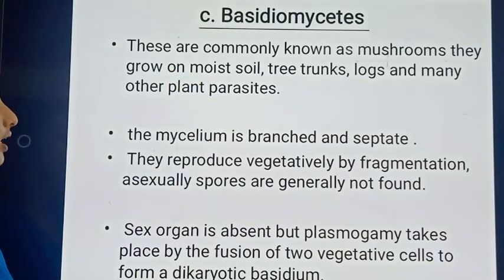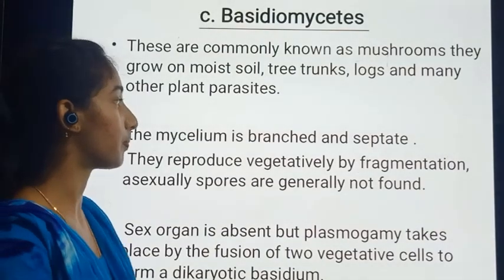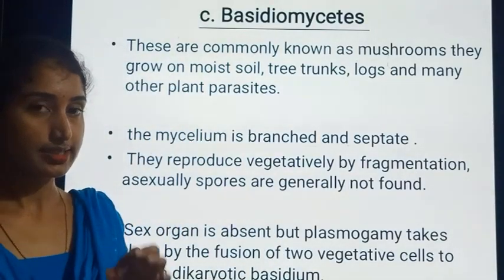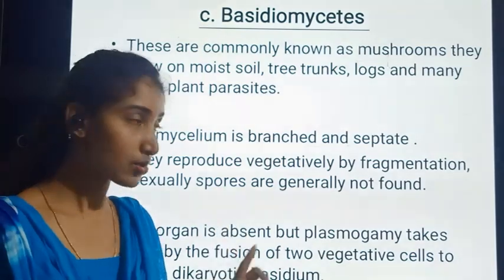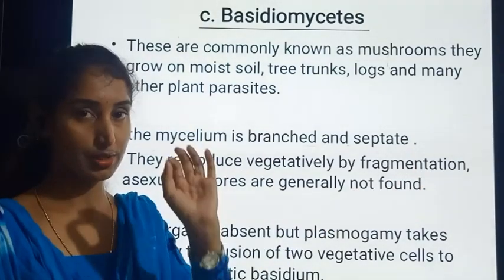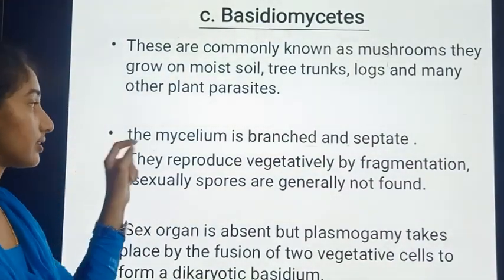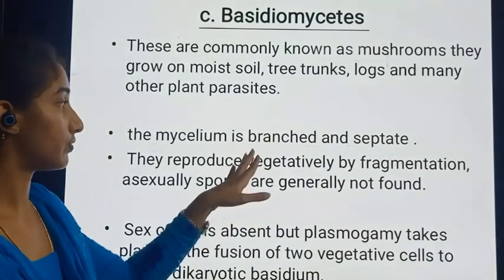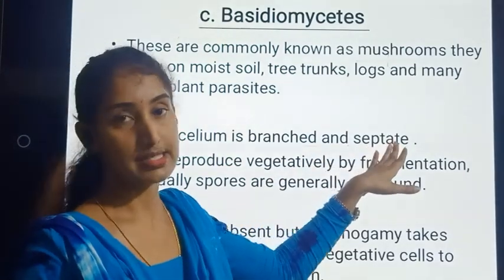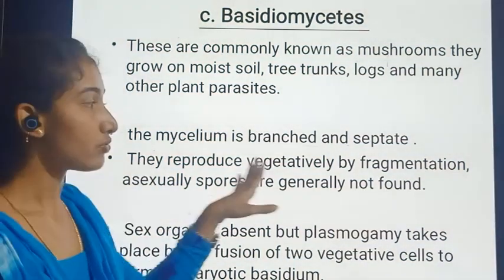The mycelium, or body of the Basidiomycetes, is branched and septate. Comparing with Ascomycetes, the members of Ascomycetes were also branched and septate — that is, cross walls are present. Similarly, in Basidiomycetes, the mycelium is branched and cross walls are also present.